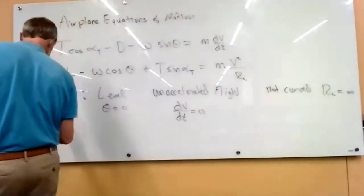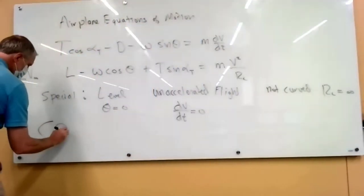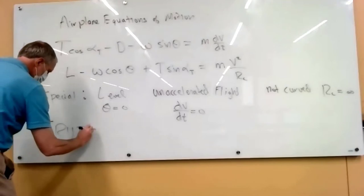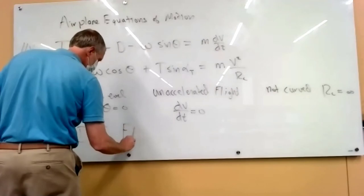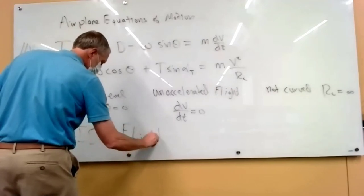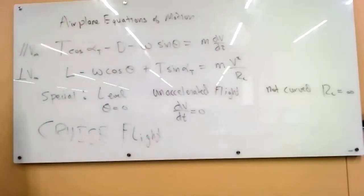So this is really what would be called the cruise flight condition. So that's what you do after you take off, you climb to altitude, and then you're going to California, and you just maintain the same altitude, same airspeed, and you don't turn.